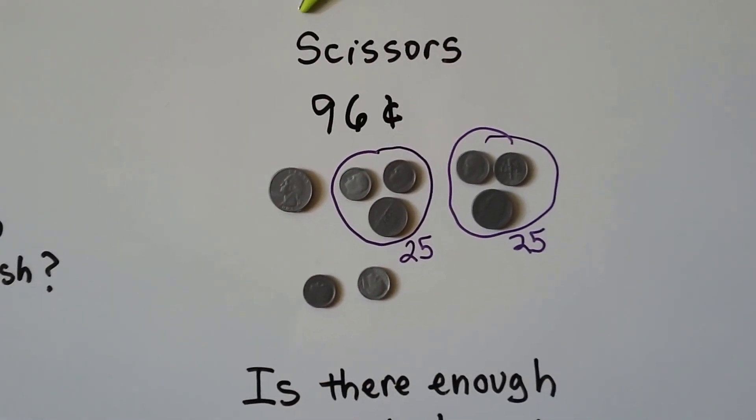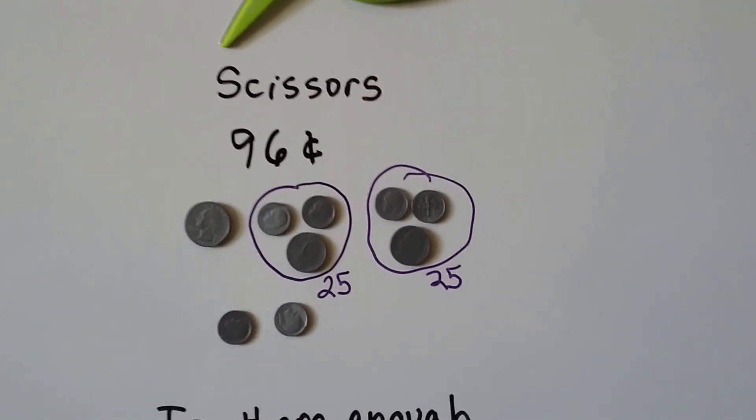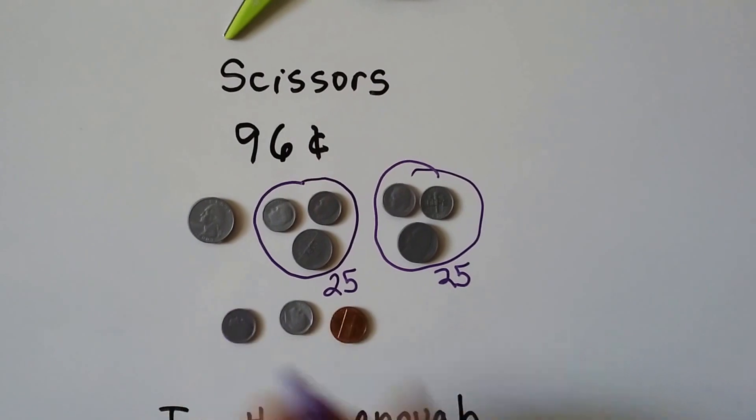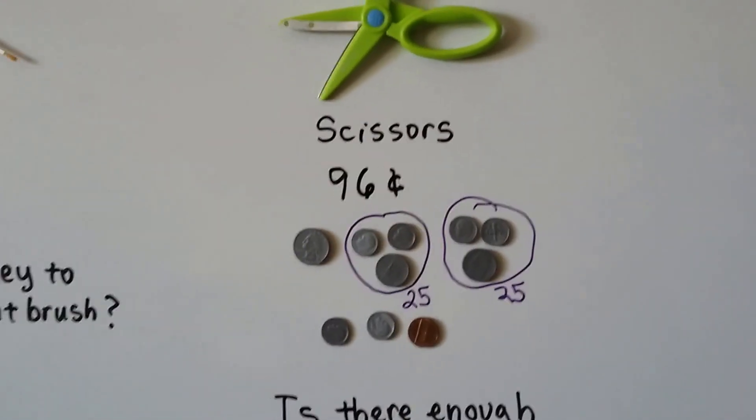Oh, we have 95 cents. And the scissors cost 96 cents. So if we had one more penny, we would have enough, wouldn't we? We'd have 96 cents. Then we'd have enough to buy the scissors.